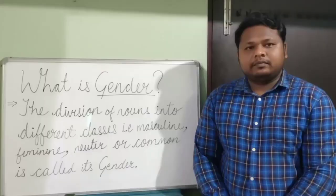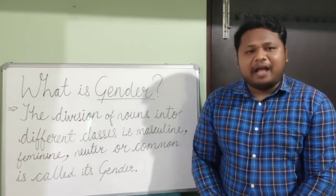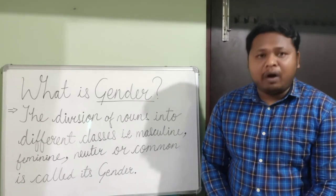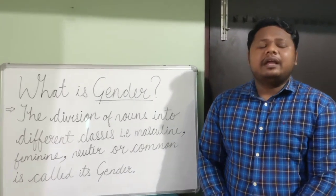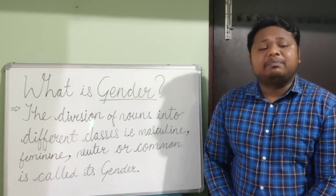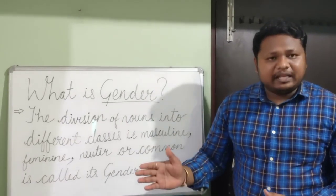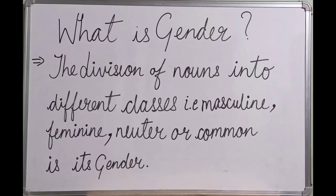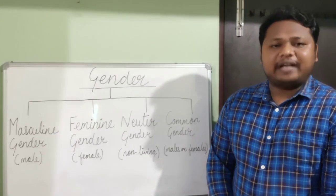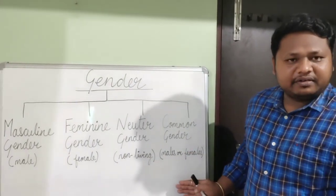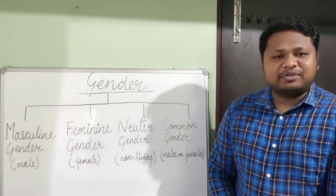Good morning students and welcome back. Today we are going to do a grammar lesson on gender. The division of nouns into different classes — masculine, feminine, neuter, or common — is called its gender. In English grammar there are four types of gender: masculine gender, feminine gender, neuter gender, and common gender. Let us study all four types one by one.